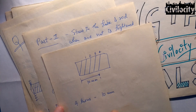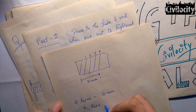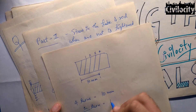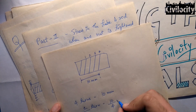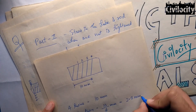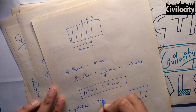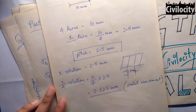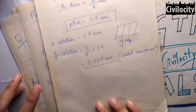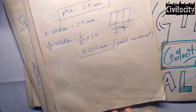Now, 4 threads per 10 mm means 4 rotations move the nut 10 mm, so the pitch (movement per 1 full turn) is 10 divided by 4, which is 2.5 mm. Since we give only one quarter turn, the axial movement is one quarter times 2.5, which equals 0.625 mm.